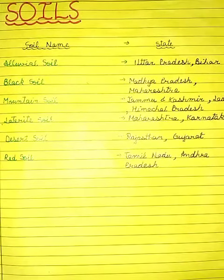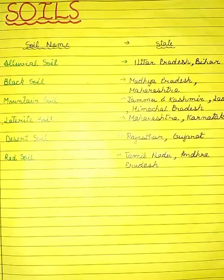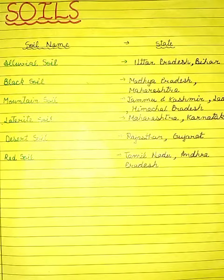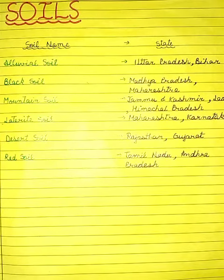Alluvial soil: Uttar Pradesh, Bihar. Black soil: Madhya Pradesh, Maharashtra. Mountain soil or forest soil: Jammu, Kashmir, Ladakh, Himachal Pradesh.